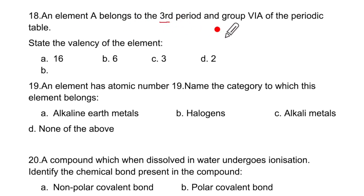Element A belongs to the third period and group 6A. Third period means 2, 8 and group 6A means 6. So it is 2, 8, 6. The valency of this element. This is going to be a non-metal here and it is going to accept two electrons. So it will be 2 minus. An element has atomic number 19. This is group 1A which means alkali metals.